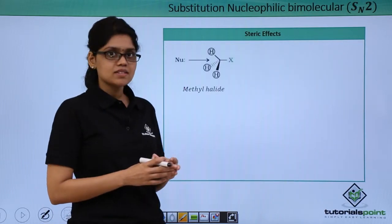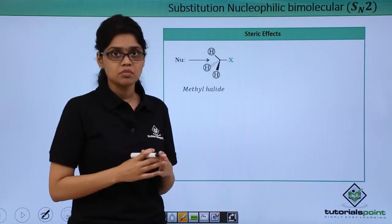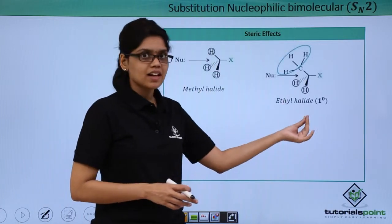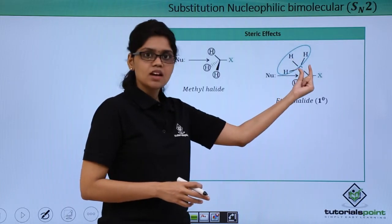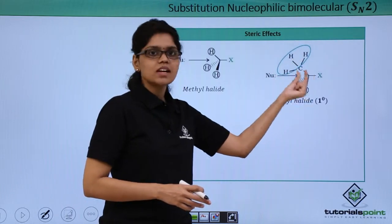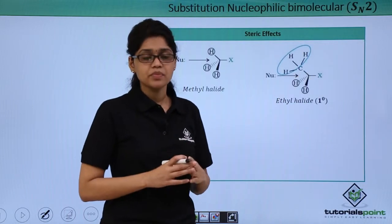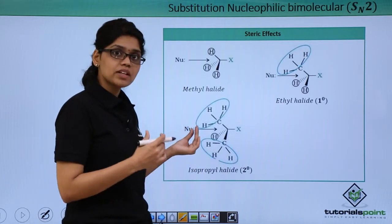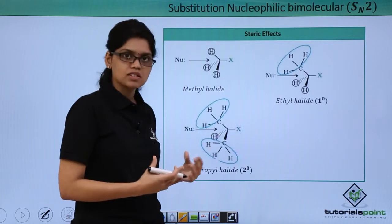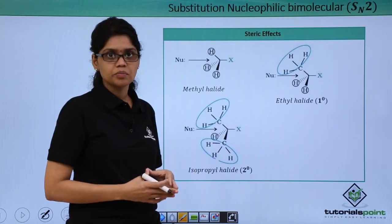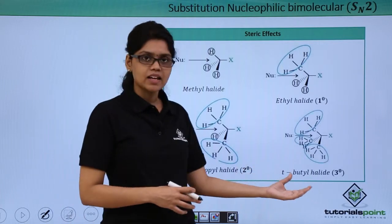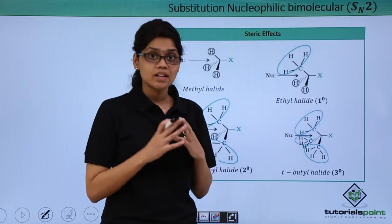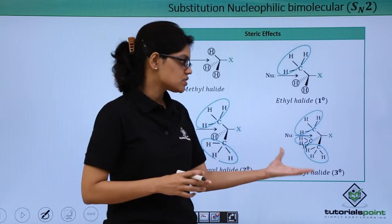If you take a methyl halide, you can see that the nucleophile does not suffer from any steric inhibition and can directly attack the C–X bond. If you take a primary alkyl halide like ethyl halide, the nucleophile can still reach the C–X bond with ease. If you look at a secondary alkyl halide like isopropyl halide, the nucleophile finds it much more difficult to attack the C–X bond due to two CH₃ groups. And for a tertiary alkyl halide, it is not possible for the nucleophile to approach the C–X bond at all due to very high steric hindrance.